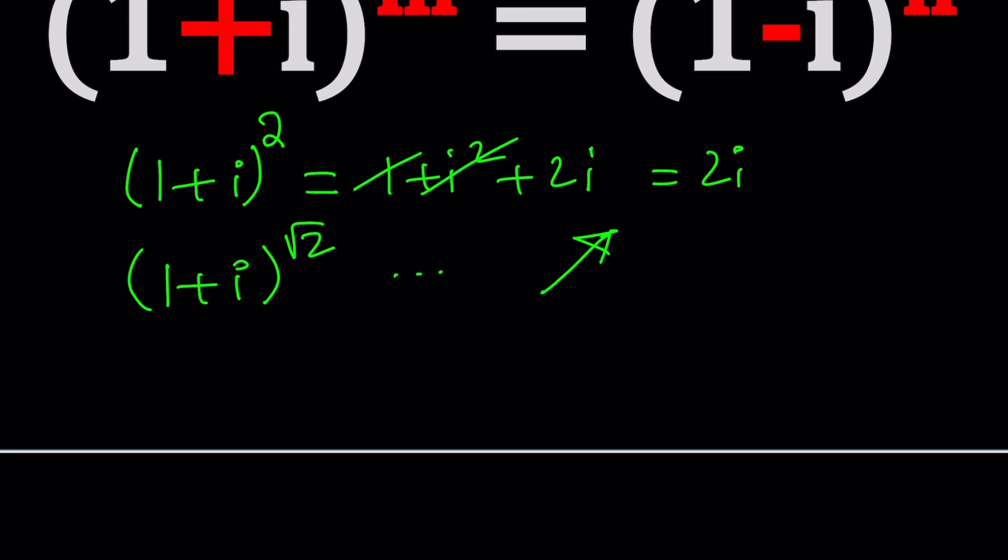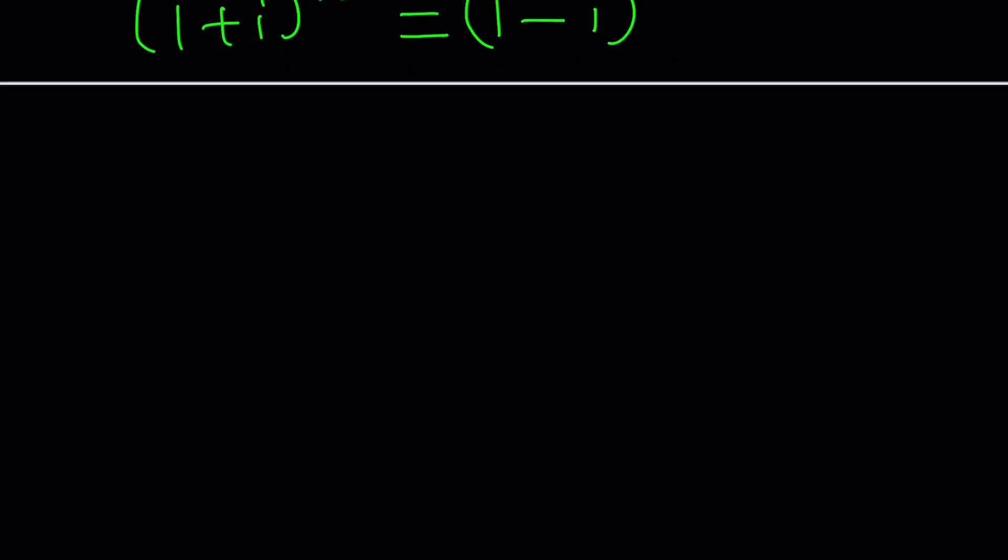You get an imaginary number, which makes 1 plus i very special. Only 1 plus i or multiples of 1 plus i satisfy this nice property. And then we also done a power like an irrational power of 1 plus i. Go ahead and check out that video as well. But here we don't even know what the powers are. For example, if m is root 2, can n be something? So we need to do things in a more general way.